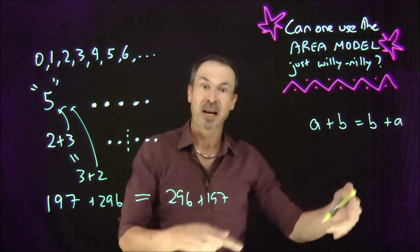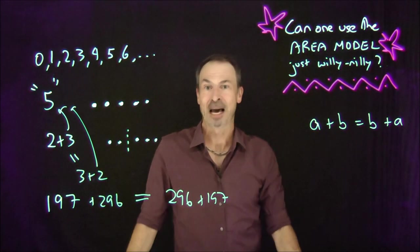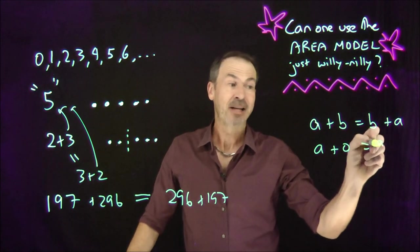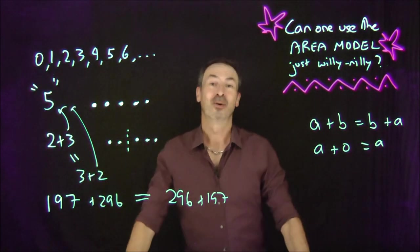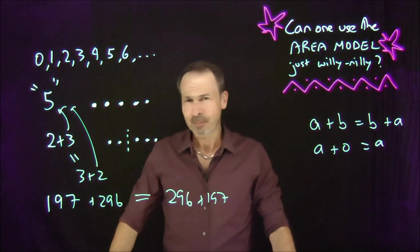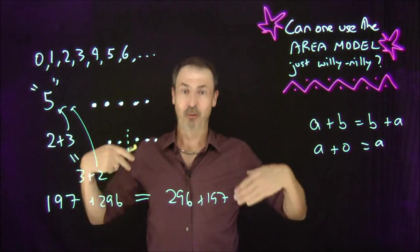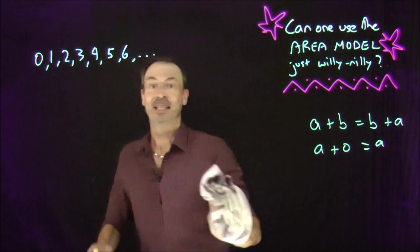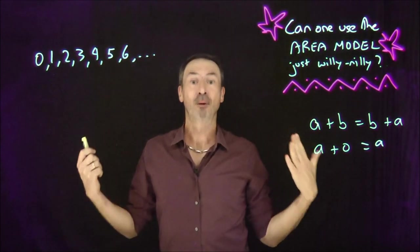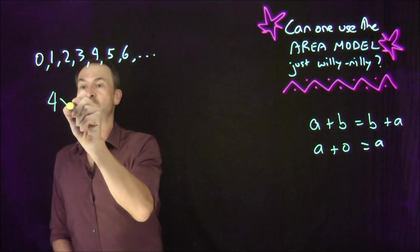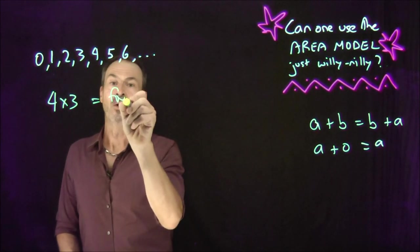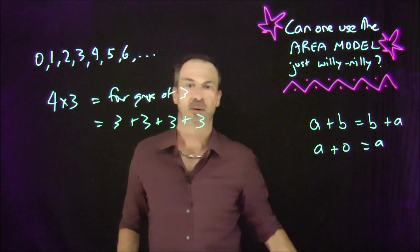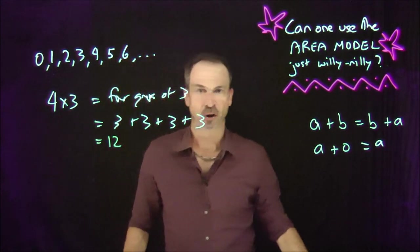We start to identify things that are obviously and patently true about the counting numbers. For example, A dots plus no more dots leaves me with A dots. We can list lots of different properties. After a while, you might start doing repeated additions and come up with the notion of multiplication. In the context of just the counting numbers, multiplication manifests itself as repeated addition. When I write 4 times 3, I'm really thinking of four groups of three.